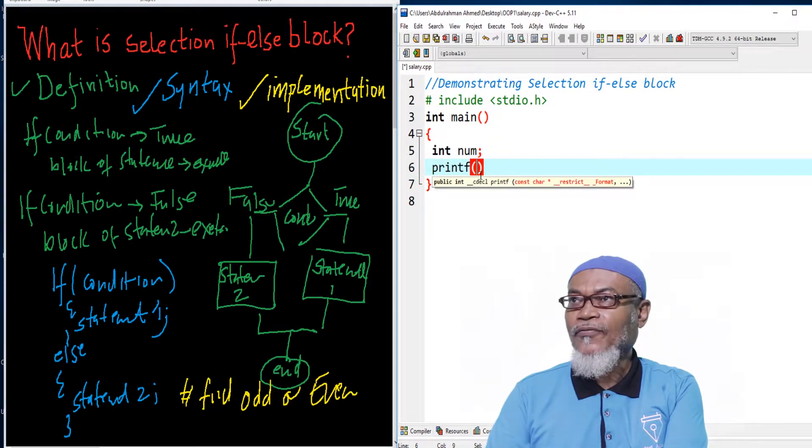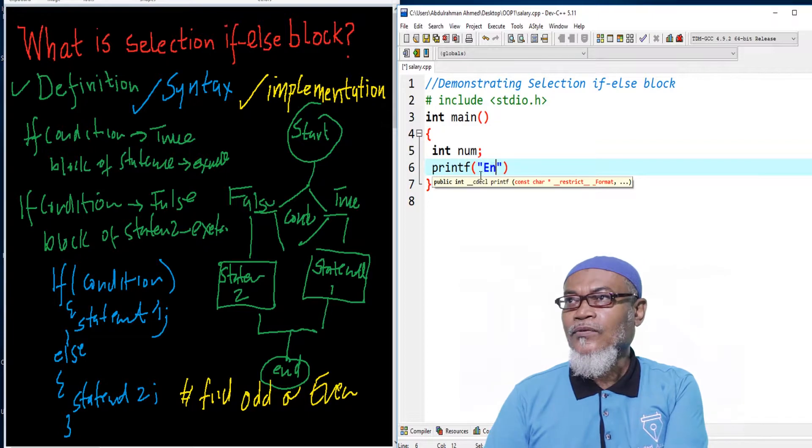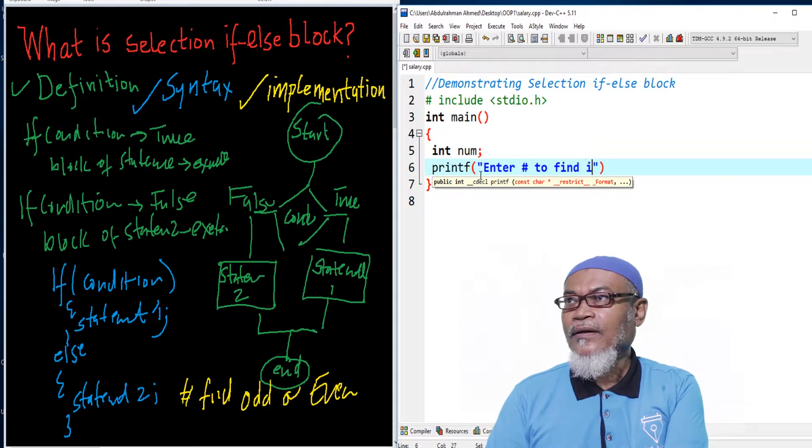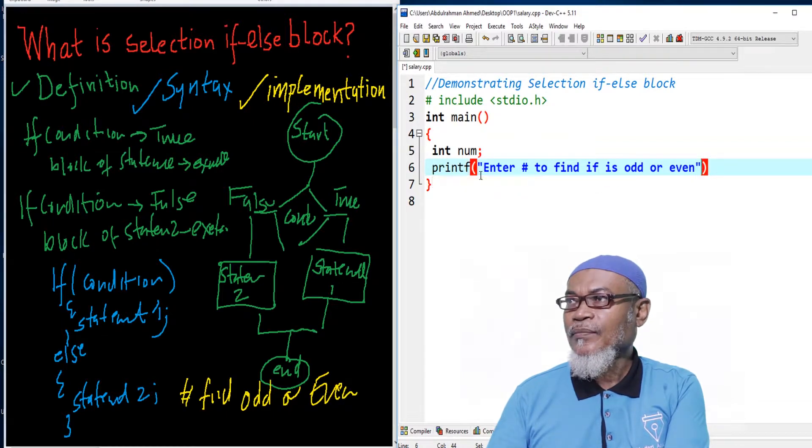Then we're going to ask a user to enter a number to find out if it is odd or even. So we're telling you to enter a number to find if it is odd or even. That's the first step.